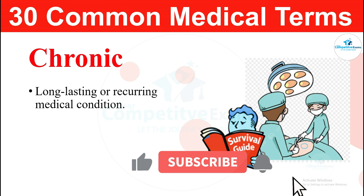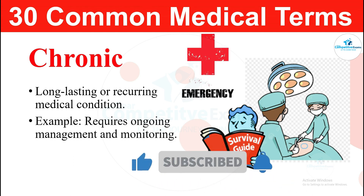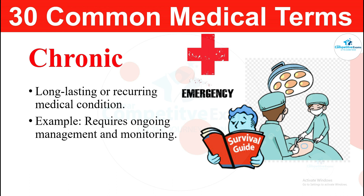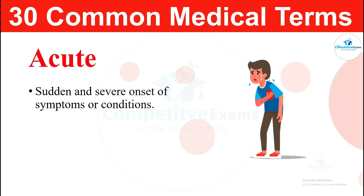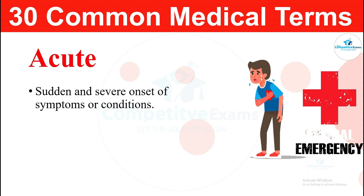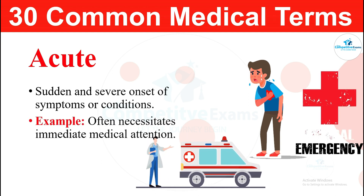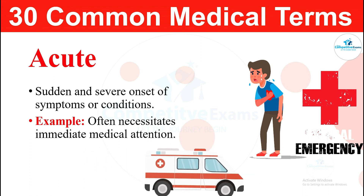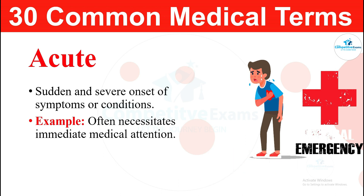The next medical term: chronic. Chronic refers to a long-lasting or recurring medical condition that requires ongoing management and monitoring. The next term: acute. Acute refers to a sudden and severe onset of symptoms or conditions that often necessitates immediate medical attention.